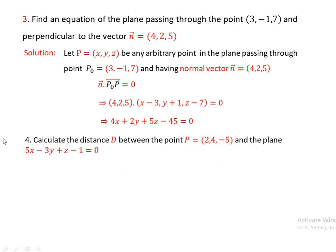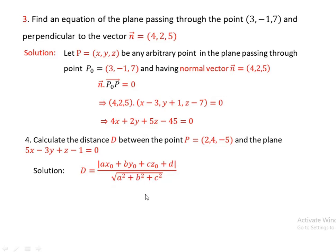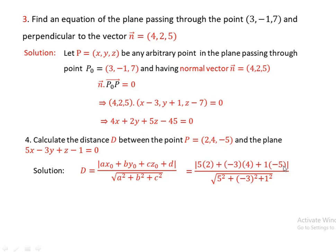Problem 4: calculate the distance d between the point P = (2, 4, -5) and the plane 5x - 3y + z - 71 = 0. Using the distance formula, d equals the absolute value of (a·x₀ + b·y₀ + c·z₀ + d) over the square root of (a² + b² + c²). Substituting: absolute value of (5·2 + (-3)·4 + 1·(-5) - 71) over the square root of (25 + 9 + 1), which gives absolute value of (10 - 12 - 5 - 71) over the square root of 35, resulting in 78 over the square root of 35.